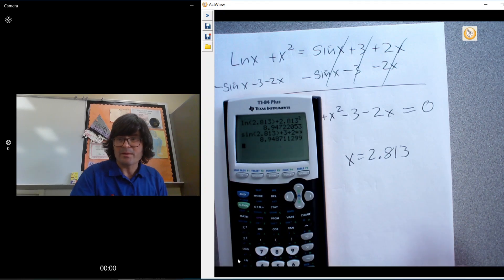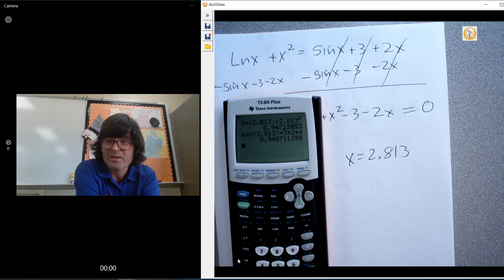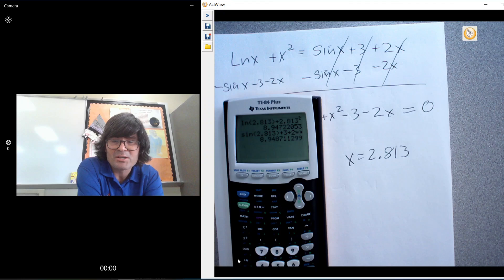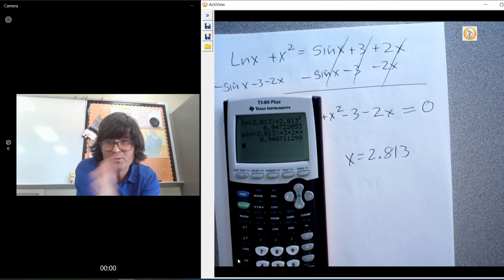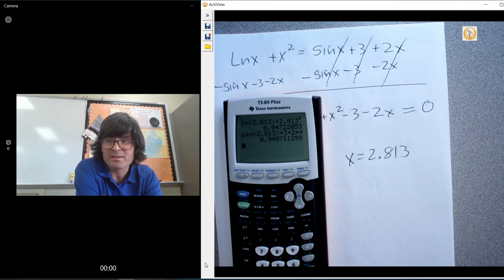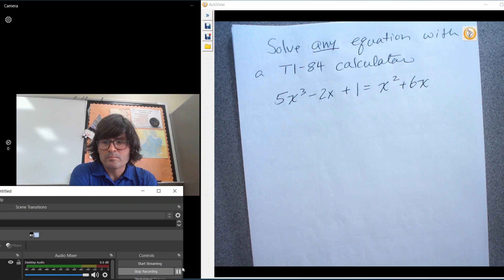So anyway, like I said, if you're on the ACT especially, something where time is the boogeyman and you need to do things fast, even if you know how to do something, sometimes by just moving everything over to one side, set it equal to zero, and finding the x-intercept on the calculator, that can save you that time to do this as efficiently as you can. Anyway, I hope this helps. I'll see you next time.